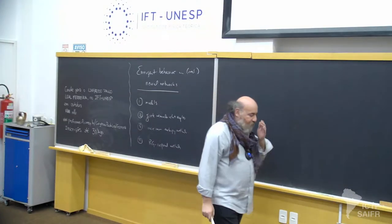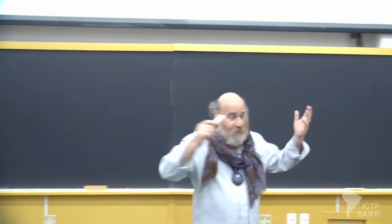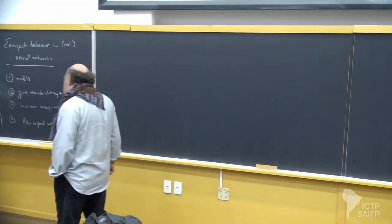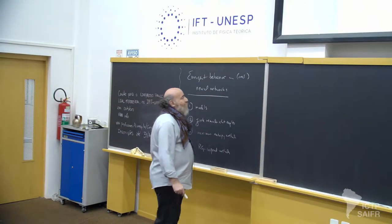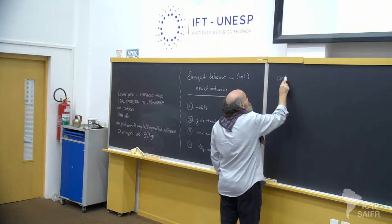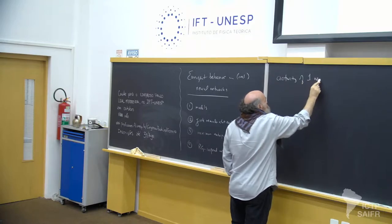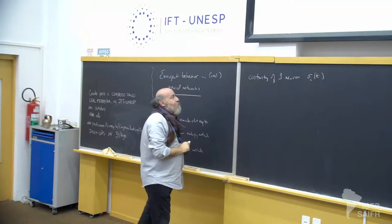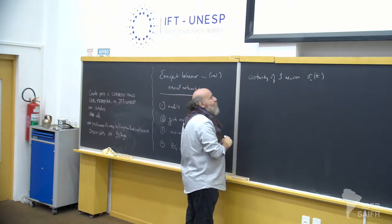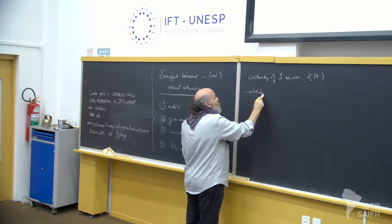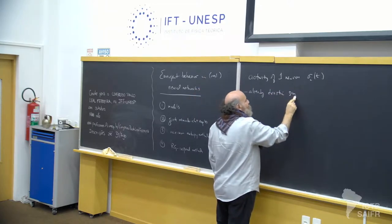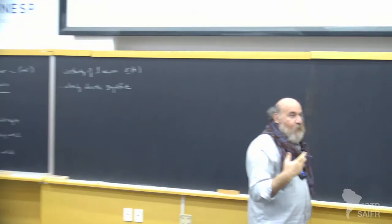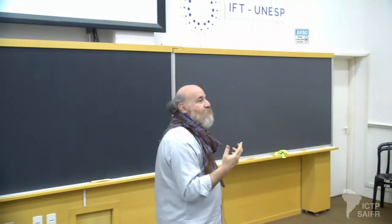If you want to think about a network of neurons, the tradition is to describe the activity of one neuron as sigma_i at time t. It's worth noting that this is already a drastic simplification. The notion that there is a single variable that describes what a neuron is doing is clearly an approximation, and it's a drastic approximation.